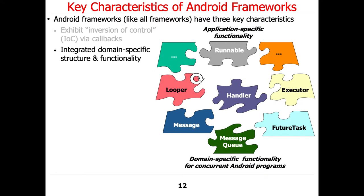The second concept is integrated domain-specific structure and functionality. Rather than having very general-purpose, domain-independent classes that are useful for everything but not particularly useful for specific things, a framework gives you more domain-specific capabilities. An example of a domain-independent capability would be something like a string class — strings are useful for everything. But a string class is domain-independent and doesn't embody domain-specific structure and functionality.